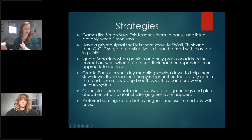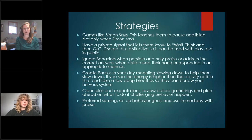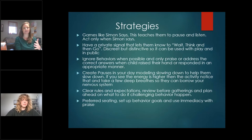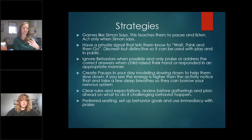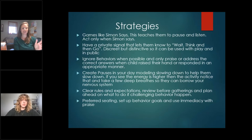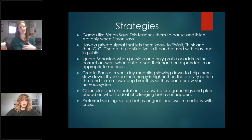Strategies for developing response inhibition and impulse control can start as early as simple games like Simon Says or Red Light, Green Light — just teaching them to wait, think, stop, and pause. If a child struggles in this area, develop a private signal that lets them know to wait, think, and then go. The signal should be discreet but distinctive so it can be used in public areas. In the classroom, set clear expectations and ignore behaviors when possible — for example, when a student blurts out an answer, simply wait for someone to raise their hand, call on them, and then offer specific praise.